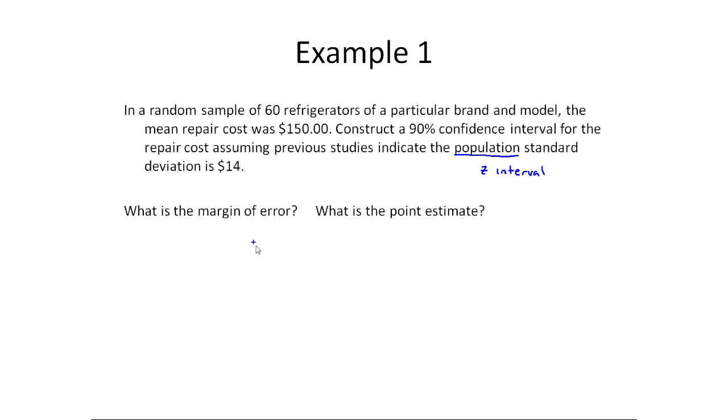To do this by hand, the formula is x-bar, our point estimate, plus or minus zc, that comes from a table, we'll talk about it in a second, times the standard error, which is sigma over the square root of n.